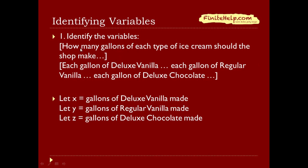How many should you make? Here it says 'gallons of each type of ice cream,' so each type of ice cream is going to be your variable. What are they actually? You can see there are each type of deluxe vanilla, each gallon of regular vanilla, and each gallon of deluxe chocolate. So these three are our variables, and I've arbitrarily assigned them to x, y, and z.